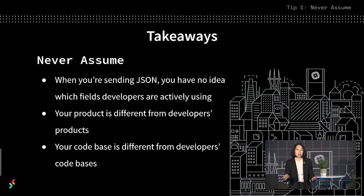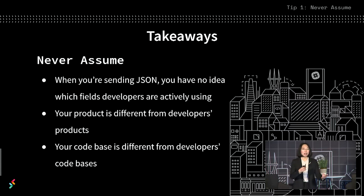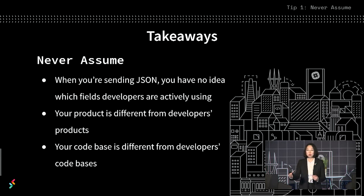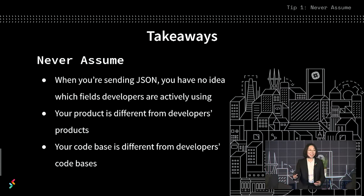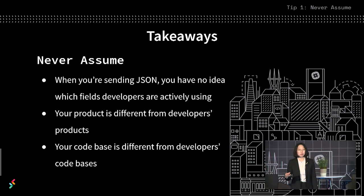When we're sending JSON, we have no idea which fields are actively being used by developers. And because our product is different from our developers' products, our code base is different from other developers' code bases. So what seems like a totally innocuous change — because falsy is falsy in our code base — could be devastating in another code base. And that change can actually break apps.